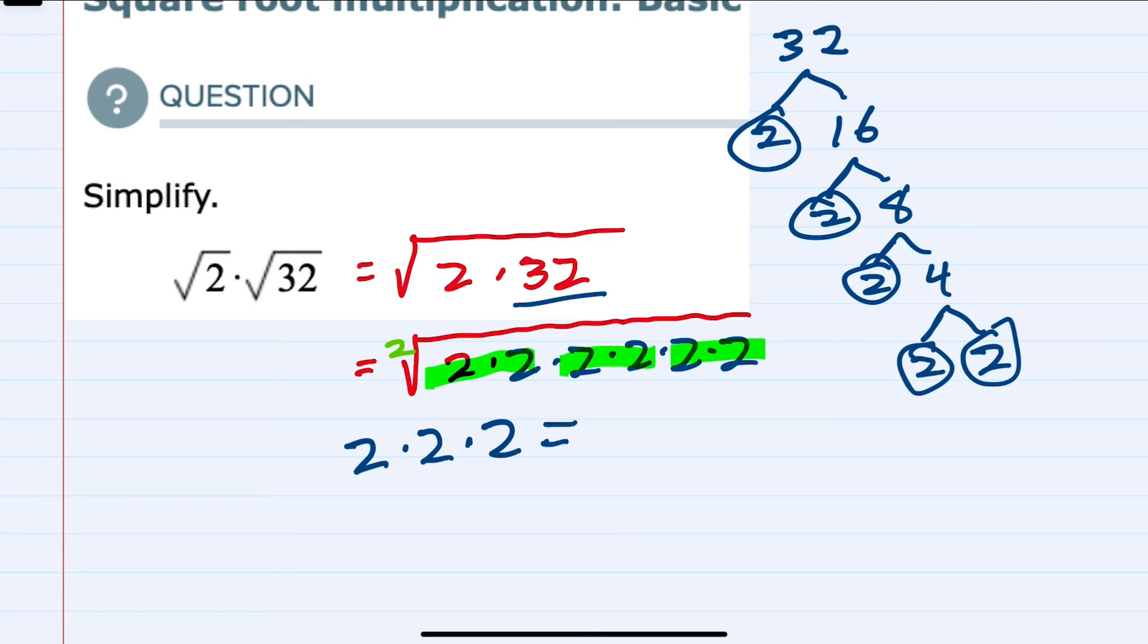2 times 2 times 2 is 8. Another way of thinking of this problem is since they are both square roots,